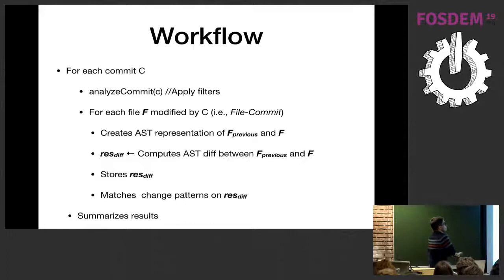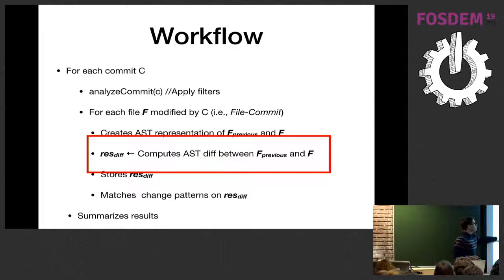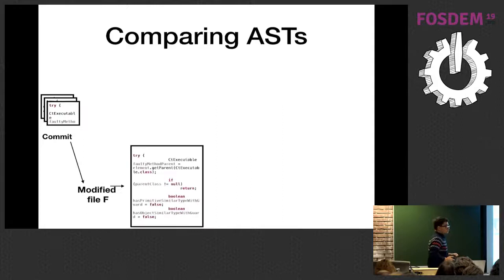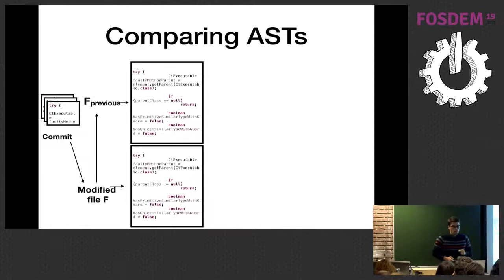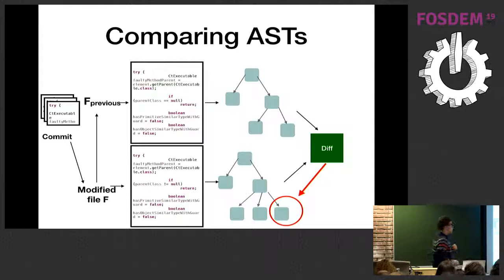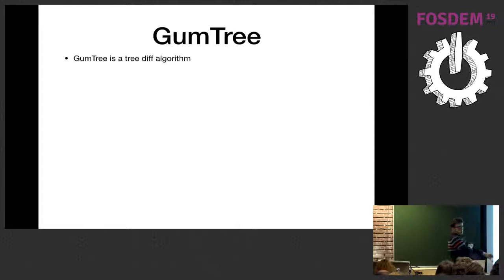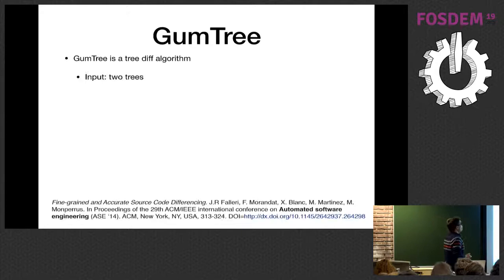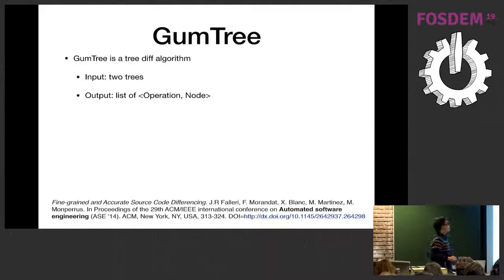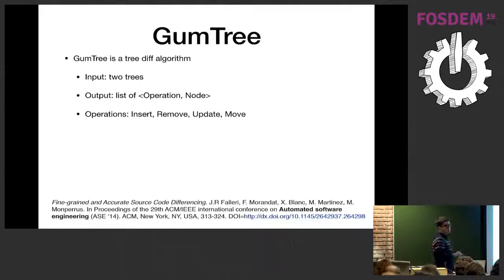Once we have the two ASTs — one from the previous version and one from the current commit — we compute the differences between them. We apply an algorithm called Gumtree that compares the two ASTs and marks the nodes that have been changed, removed, updated, or moved. Gumtree takes two ASTs as input and outputs a list of operations. Each operation is associated to one node. The available operations are insert, remove, update, and move.